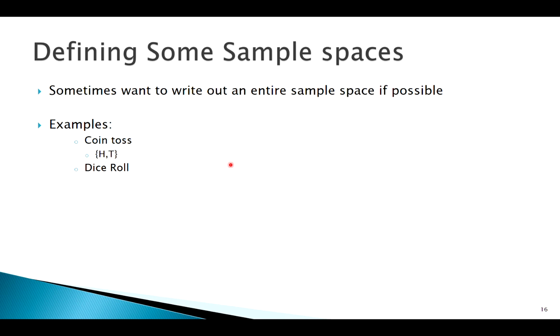Extending that to a dice roll, all of our possible outcomes are one through six. Another sample space that most people are probably familiar with is a deck of cards. There's four suits, two of them black, two of them red, 13 cards in each suit. Those cards consist of the number cards two through 10, jack, queen, king, ace, for a total of 52 cards.